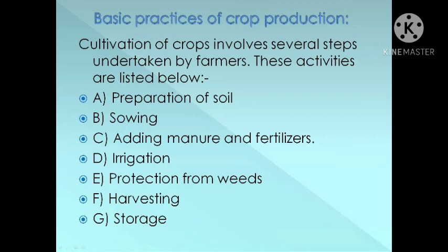Now let's see the basic practices of crop production. Cultivation of crops involves several steps undertaken by farmers. These activities are: 1) Preparation of soil, 2) Sowing, 3) Adding manure and fertilizers, 4) Irrigation, 5) Protection from weeds, 6) Harvesting, 7) Storage. We will see all the steps one by one.